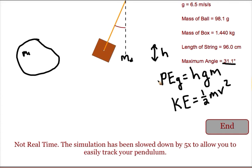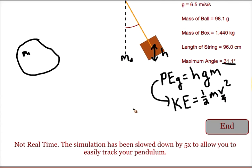So we take the potential energy due to gravity and set it equal to the kinetic energy, then solve for the velocity of the system right after the collision.